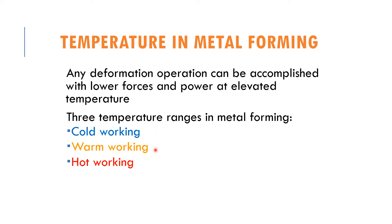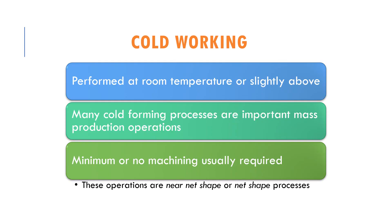The three temperature levels in metal forming are: first, cold working; second, warm working; and third, hot working. Let us look into each type of temperature one by one.